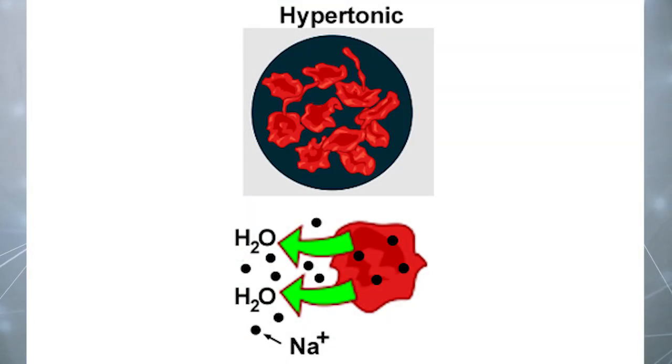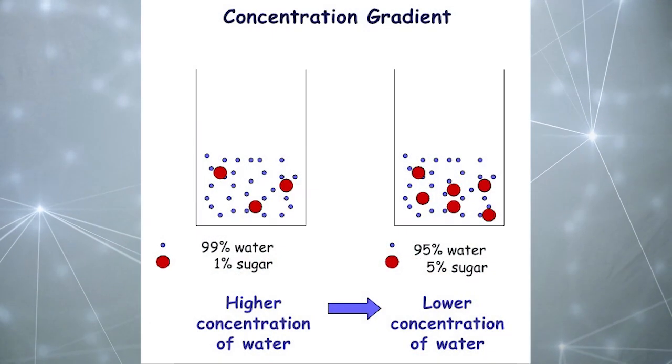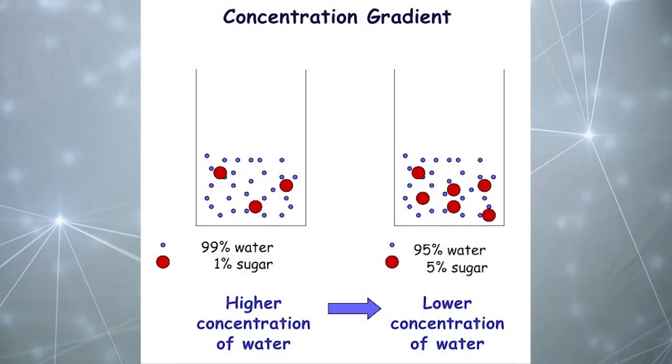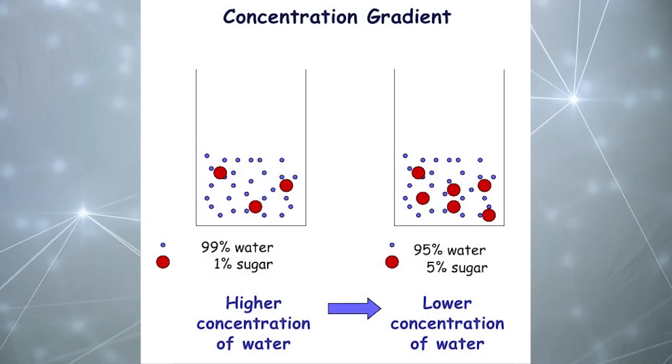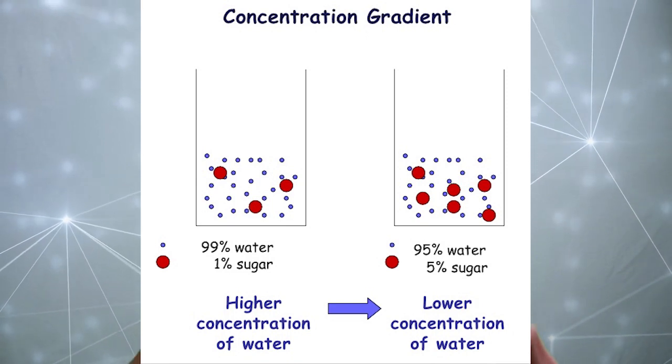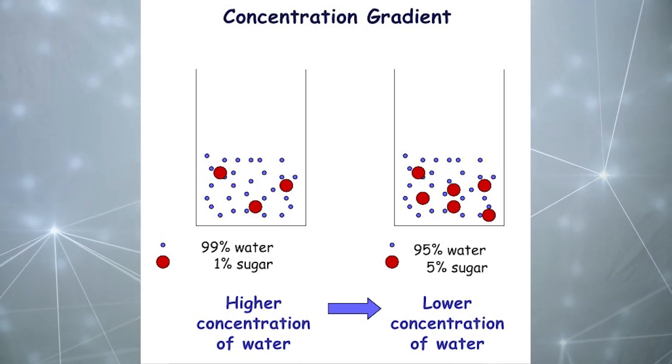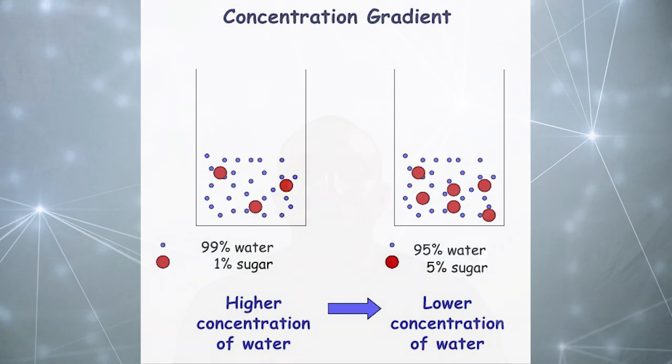This is an example of a hypertonic solution which would cause the cell to shrink and possibly die since most of the water has rushed outside of the cell. We will cover this topic in more detail in our next video. But for now just know that osmosis is the diffusion of water from high concentrations to low concentrations to maintain homeostasis by balancing out the concentrations of other substances in and out of the cell.